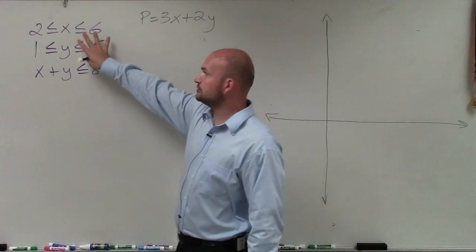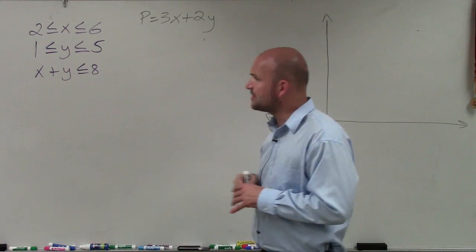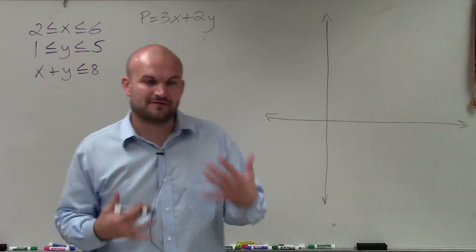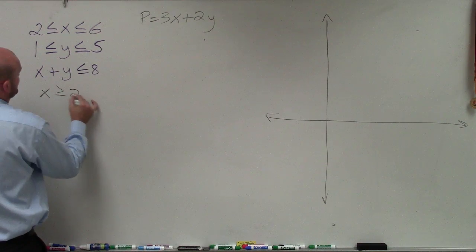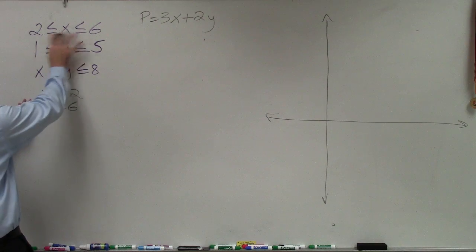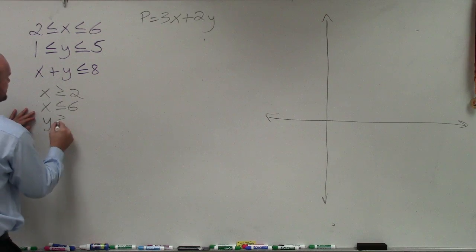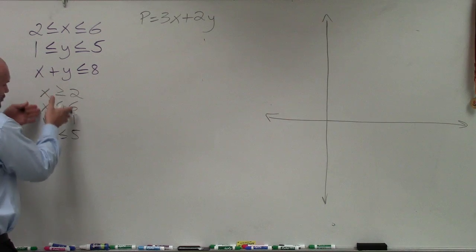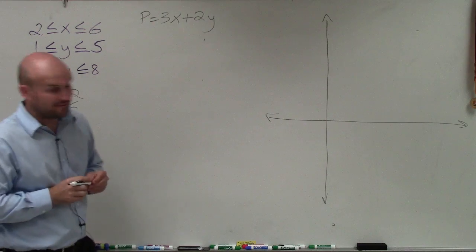To do that, we need to graph each one of these inequalities. You can see up here I have a couple of compound inequalities. The best way to graph compound inequalities is to break them up: x is greater than or equal to 2, x is less than or equal to 6. These are two different inequalities I can graph, as well as y is greater than or equal to 1 and y is less than or equal to 5. So I'm creating four new inequalities, and then this one I'll graph in slope-intercept form.